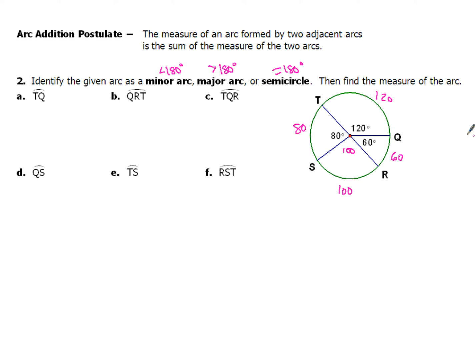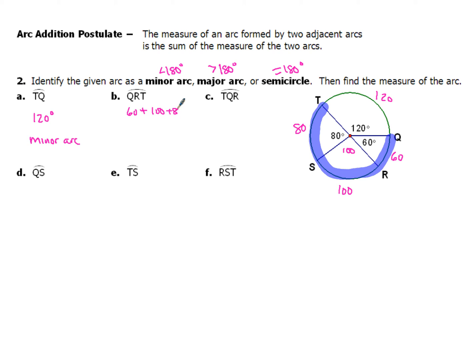For part A, we start at T and go to Q — that arc TQ has a measurement of 120 degrees, which is less than 180, so it's a minor arc. For arc QRT, I start at Q, go through R, and all the way around to T, adding up 60 plus 100 plus 80 to get 240 degrees — that's a major arc. Go ahead and hit pause, figure out the rest of these, then come back and check.